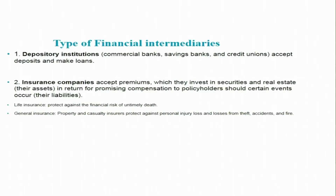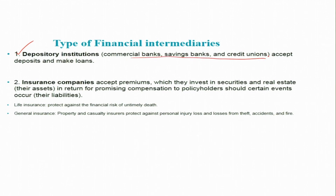Let us now move to the third aspect: types of financial intermediaries. We can understand them by going through various types, starting with depository institutions. Depository institutions include mainly commercial banks, savings banks, and credit unions. We also call them banking institutions, and the terms are used interchangeably.